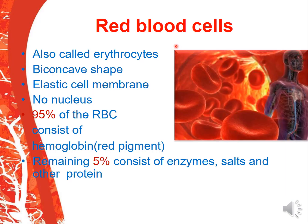In detail about red blood cells: they are also called erythrocytes. They are biconcave in shape — look at the shape. They have an elastic cell membrane. There is no nucleus. 95% of the RBC consists of hemoglobin, which is a red pigment — that is why RBCs are red in color. The remaining 5% of RBC consists of enzymes, salts, and other proteins.